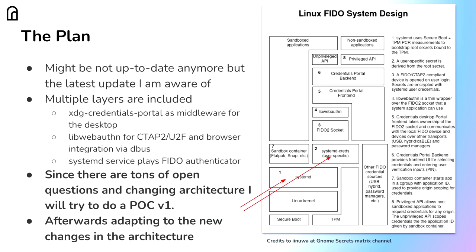My idea was to basically do a POC version 1 — just see if it works out, do some testing, and iterate on that for the full integration later. I think this is a good idea because there are a lot of changing components from the XDG desktop portal side, and I still need to get in contact with those people.